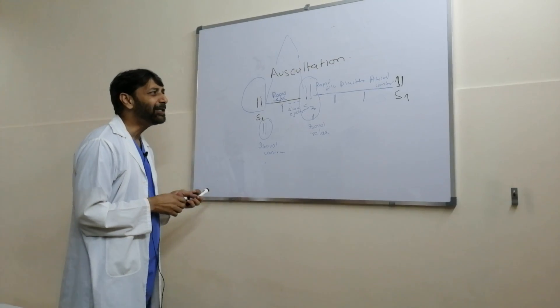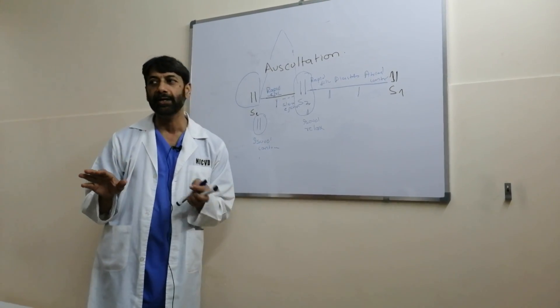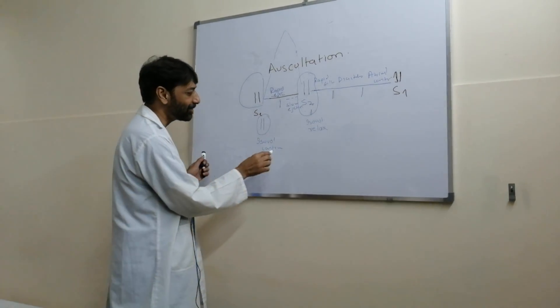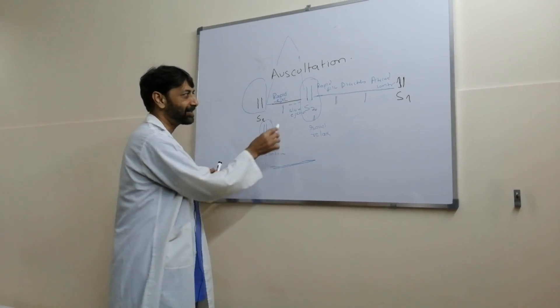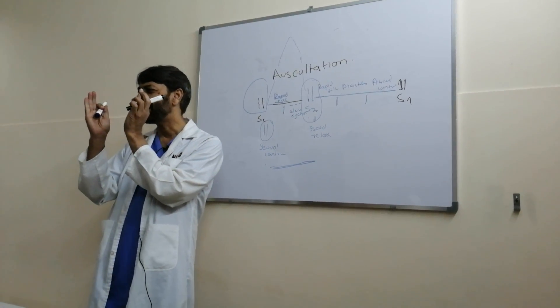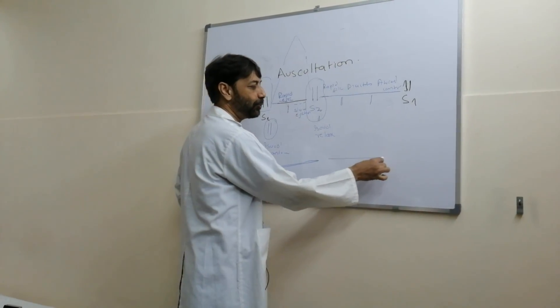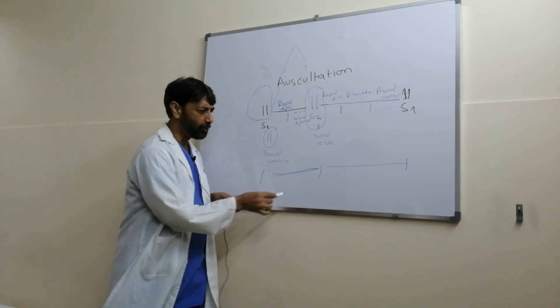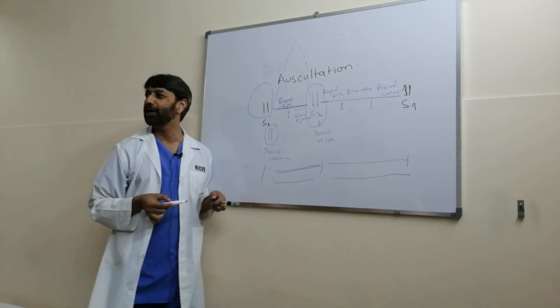Isovolumic contraction, rapid ejection. During auscultation, if your patient's heart rate is not very fast, the important thing is to gauge this duration. Systole is lesser in duration as compared to diastole. So after listening to the sounds, try to assess which sound is coming after a longer pause.